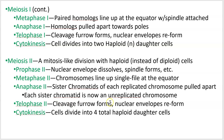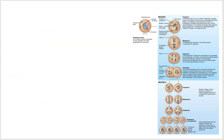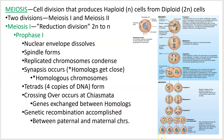Telophase II happens the same way — you get a cleavage furrow, the nuclear envelope reforms, and then cytokinesis finishes, giving you four daughter cells total if you followed them all the way through. Those are the cells that go on to become either sperm cells or egg cells. This is the process — meiosis — of producing gametes.